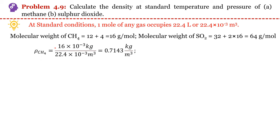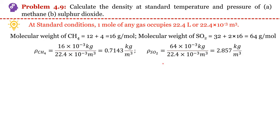For density we will divide mass by volume. Mass is 16 grams, so convert grams to kg so that the unit of density will come out as kg per meter cube. In the same way we can estimate the density of SO2, and it will come out as 2.857 kg per meter cube.